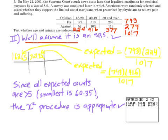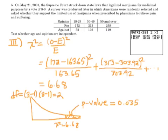The chi-squared distribution is appropriate because all expected counts are bigger than 5 — the smallest one is about 60.35. Now I do the chi-squared formula. I have to do it for each cell on the table, so it's a 2 by 3 table and I've got to do it six times.